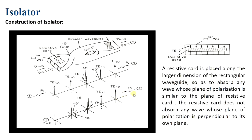Consider port 2 excited with a TE10 mode — the electric field is vertical. When it passes through the resistive card at port 2, the electric field vector is perpendicular to the card, so the signal passes through. The signal then travels to the ferrite rod where it gets rotated by 45 degrees in the clockwise direction.